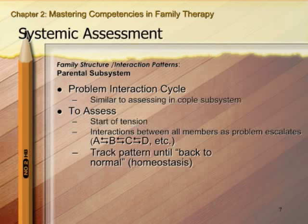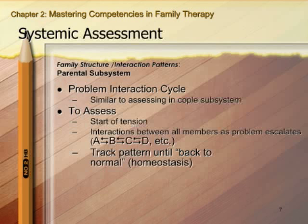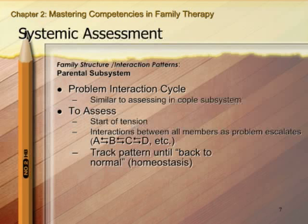The problem interaction cycle is assessed the same way with families as with couples, just usually with more people involved. You're looking at how A affects B, and B responds to C and D. Start with a behavioral description of when the problem begins, get behavioral descriptions of how each person responds to the others, and keep going. People often want to tell you only the first half — keep asking questions about what happens next until everyone is back to family homeostasis.